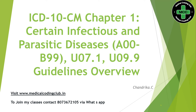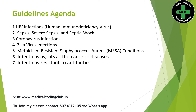Hey everyone, welcome back to Medical Coding Club. This is Chandrika. Today let me discuss Chapter 1 Specific ICD Coding Guidelines. Chapter 1 is Certain Infectious and Parasitic Disease, with code range A00 to B99, and for COVID we have codes U07.1 to U09.9. Let's begin with the specific coding guidelines for Chapter 1.